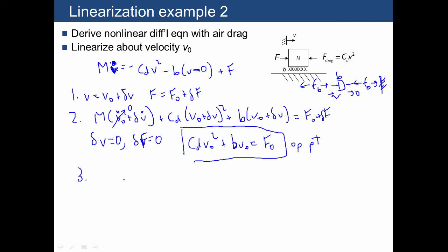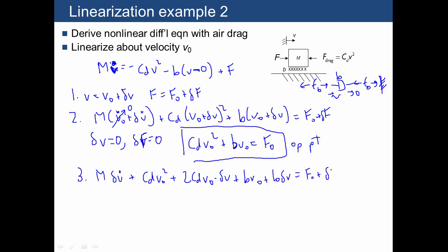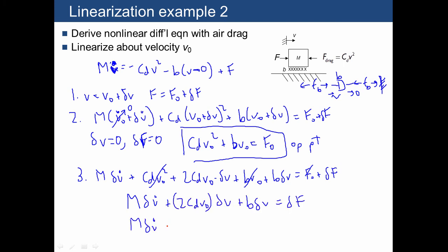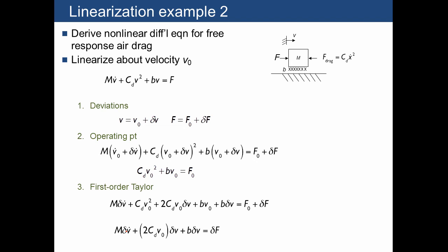Putting the δv terms back in and applying the first-order Taylor series expansion, we get m·δv̇ plus cd·v₀² plus 2cd·v₀·δv plus b·v₀ plus b·δv equals f₀ plus δf. Subtracting the operating point equation, the steady terms cancel, and combining gives the linearized ODE: m·δv̇ plus (2cd·v₀ plus b)·δv equals δf. Here are the same equations typed out.